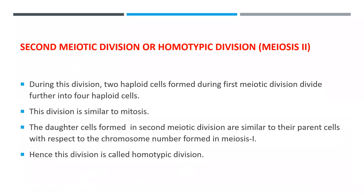Meiosis 2 is called the second meiotic division. It is also called homotypic division. During this division, the two haploid cells formed during the first meiotic division divide further into four haploid cells. Meiosis 1 gives rise to two daughter cells, and these two haploid cells further divide into four haploid cells. This division — meiosis 2 — is very much similar to mitosis.